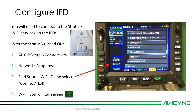Highlight and select the Stratus network, hit the Connect line select key, and after just a few seconds the Wi-Fi icon on the IFD will turn green — that's it. There's no going into maintenance mode, no setting up the SSID, no selecting remote Wi-Fi, and no adding a password, because most of these Stratus units don't come with one. You can set those options if you want, but you don't have to.